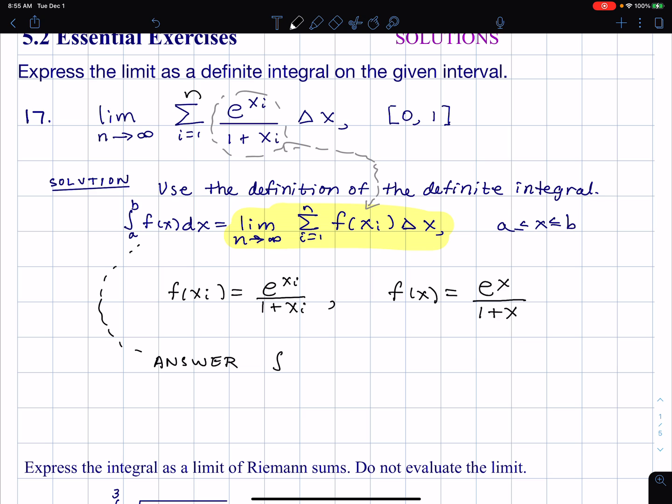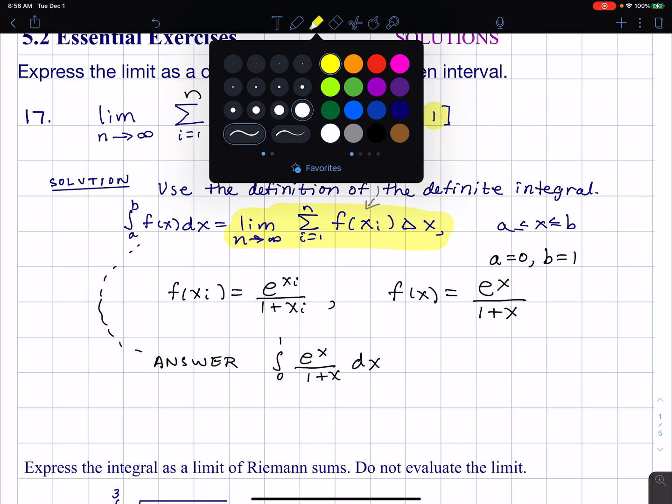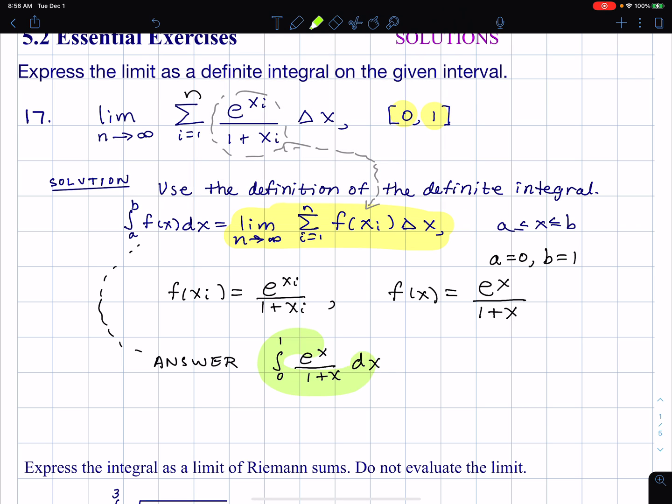Now we're going from a to b. Well, those are our bounds. Our bounds are actually given over here as 0 and 1. So that's our a and b. So I might write that down: a equals 0, b equals 1. So I go from 0 to 1, and f of x is e to the x over 1 plus x, and then I write dx. We can think of the delta x becomes dx, the sum with the limit becomes this integral symbol.